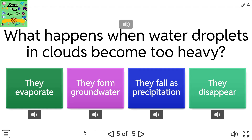What happens when water droplets in clouds become too heavy? They evaporate. They form groundwater. They fall as precipitation. They disappear.